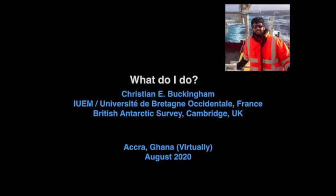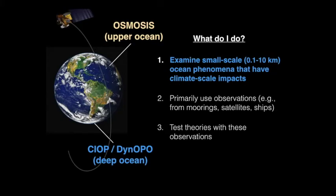So the question becomes, what is it that I do? What is my research about? As mentioned, I'm a physical oceanographer here in France. I also have a dual affiliation with the British Antarctic Survey in Cambridge, UK. I examine small-scale phenomena that have climate-scale or large-scale impacts. I primarily use observations — for example, from moorings, satellites, and ships — and then I test theories about ocean circulation with these observations.